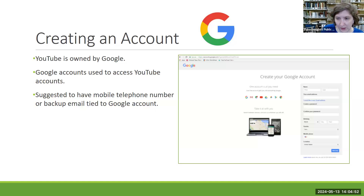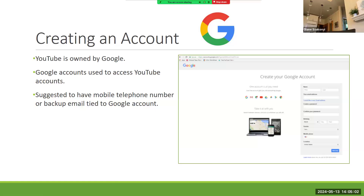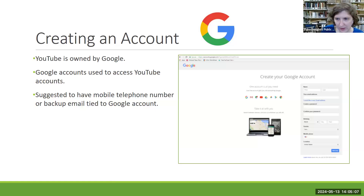You can see on the right here — that's what the page to create an account will look like. It will ask for first and last name, what you want your Gmail address to be, and you create your password. It will ask for your birthday and a mobile number. You do not have to do gender or location, but you can if you want to.